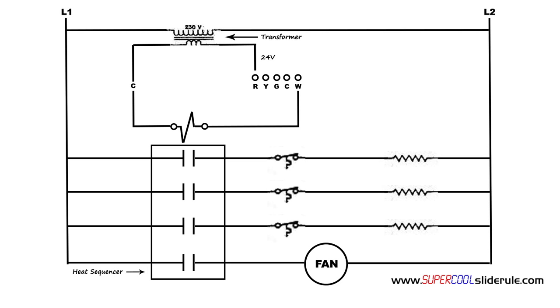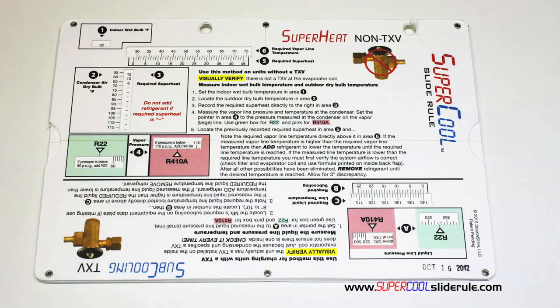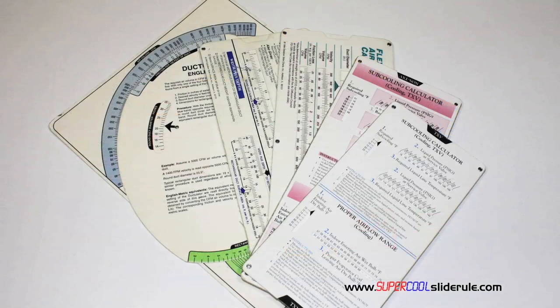This concludes our tutorial, but stay tuned while I introduce the coolest tool in the HVAC industry. Historically, technicians have carried four or five different slide rules — one for R22, one for R410A, one for metal duct sizing, one for flexible duct sizing, and yet others for diagnostics or troubleshooting.